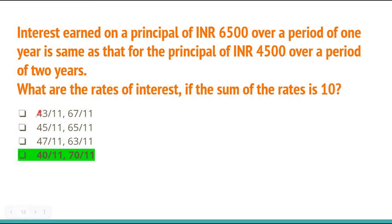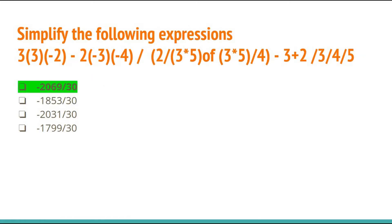The interest earned on a principal of ₹6,500 over one year is the same as for a principal of ₹4,500 over two years. Use the simple interest formula PRT/100 to find the rates of interest if their sum is 10. The answer is 40/11 and 70/11, option D. Next is a simplification using BODMAS — bracket, of, division, multiplication, addition, subtraction. Break the long expression into steps and the answer is −2069/30, option A.